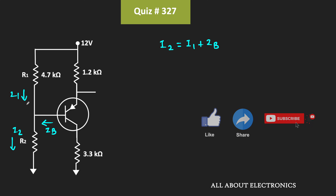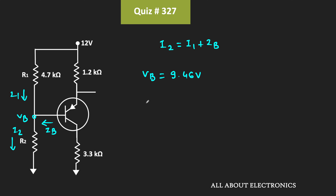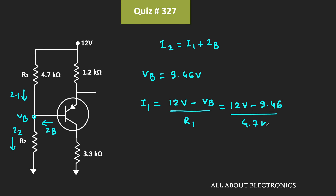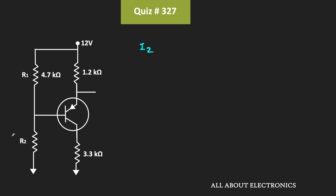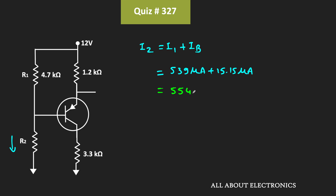First, let's find current I1. We know the base voltage VB is equal to 9.46V. That means I1 is equal to 12V minus VB divided by R1, which is 12V minus 9.46V divided by 4.7kΩ, equal to 0.539mA or 539μA. We already know the base current IB, so I2 equals I1 plus IB, that is 539μA plus 15.15μA.